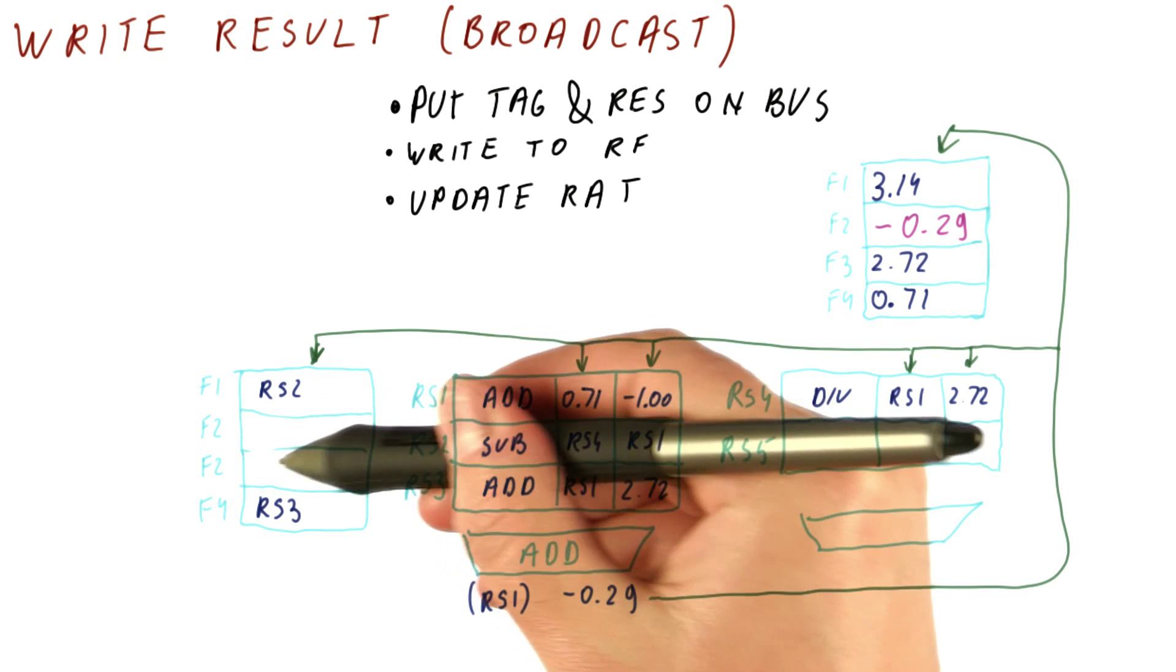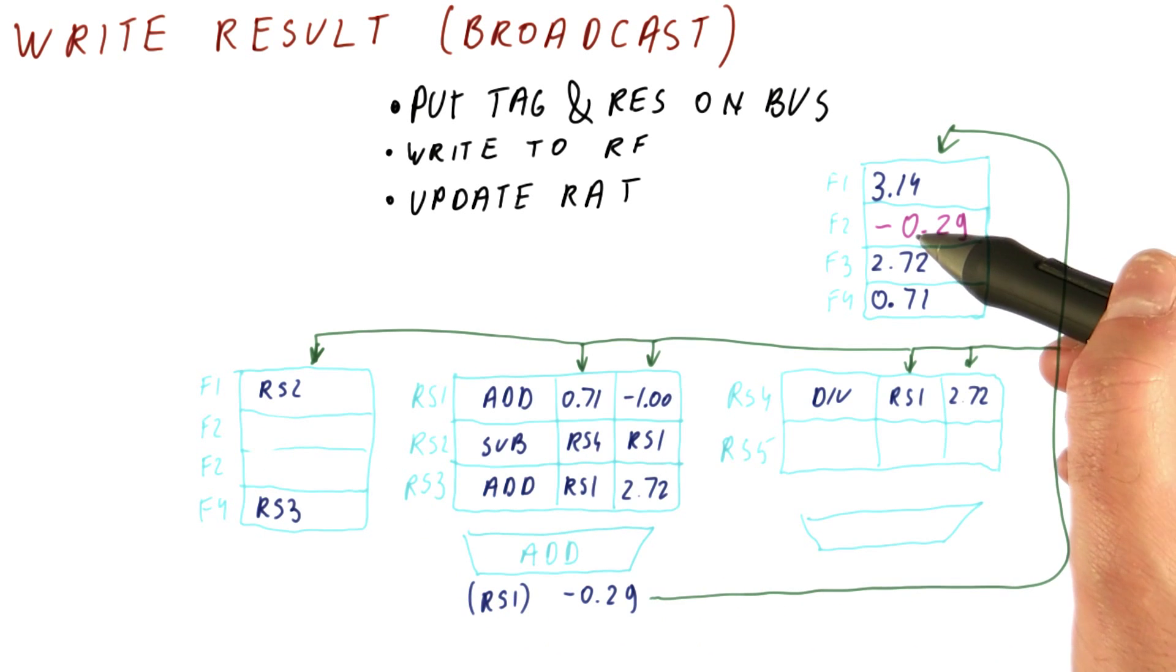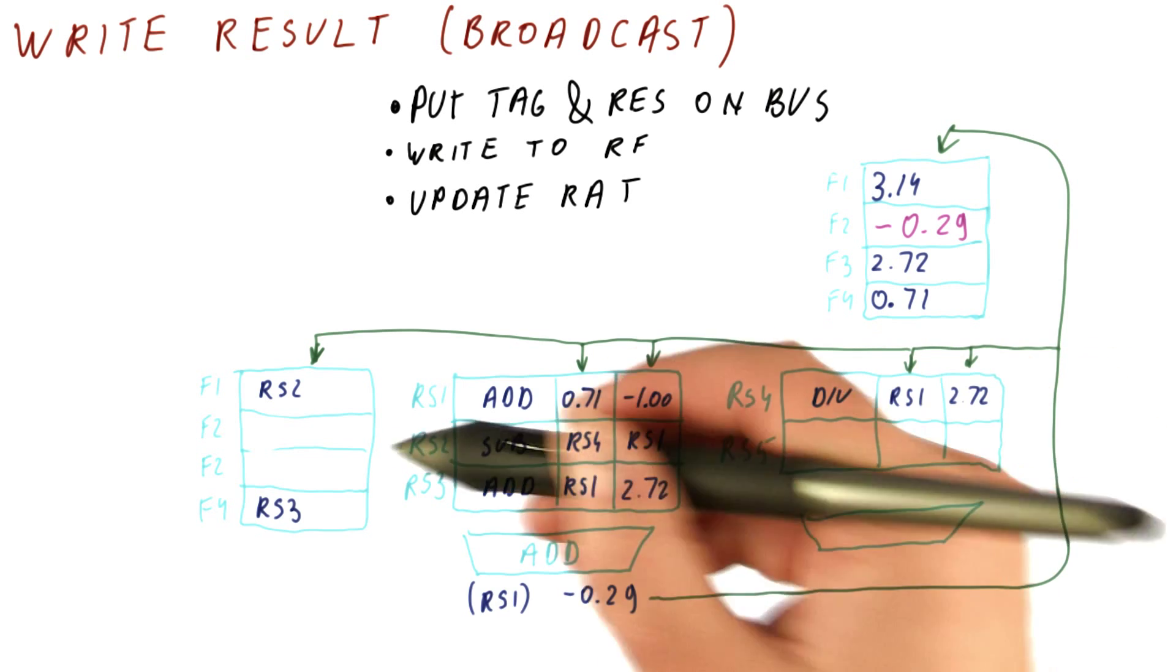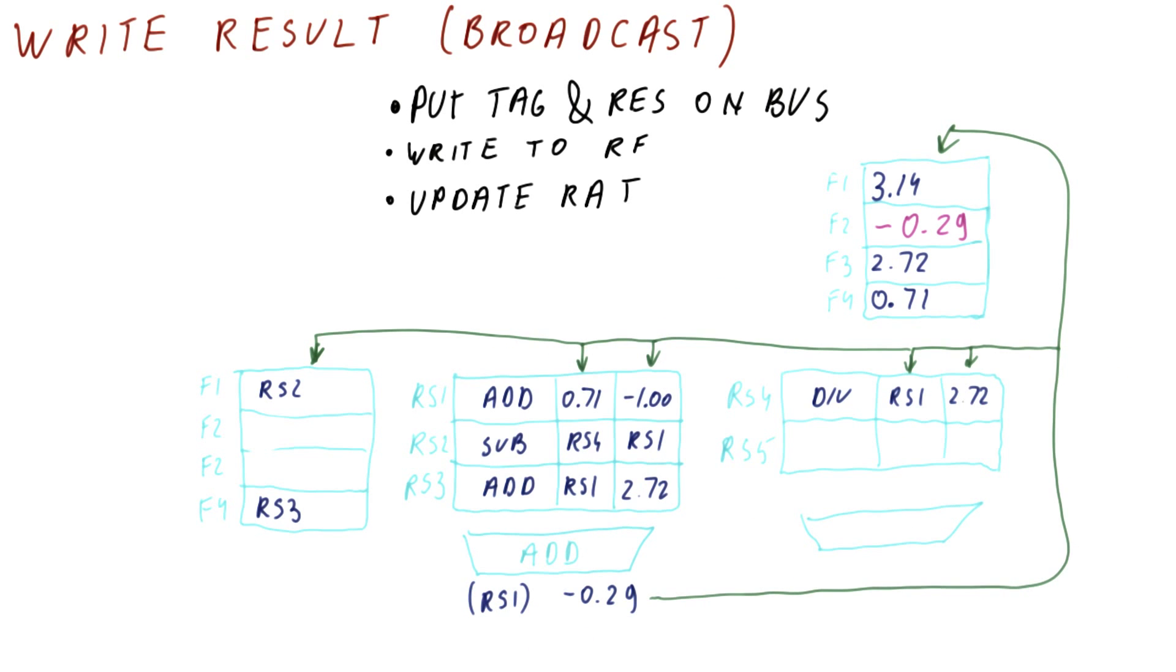We said that an empty RAT entry will be indicative of just going to the register instead of waiting for something. Now we need to tag this in a way that makes it empty. Usually there is a valid bit here that says it's empty.